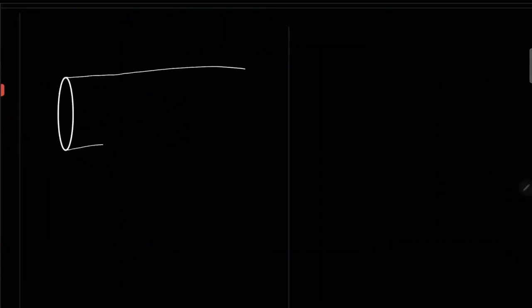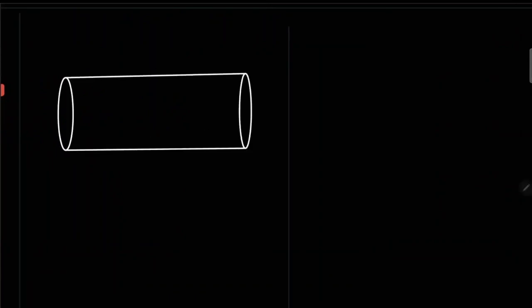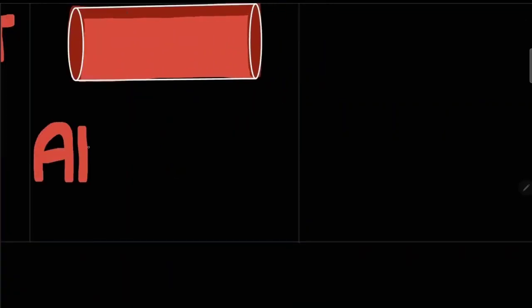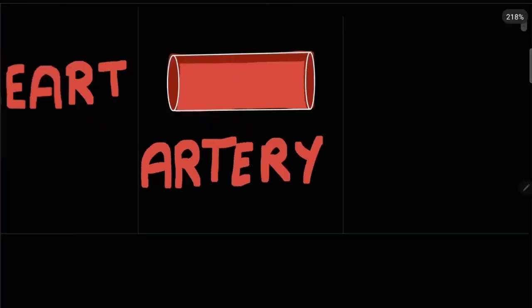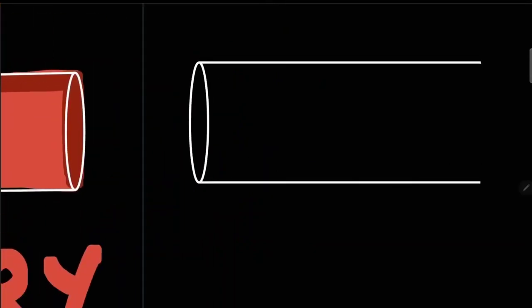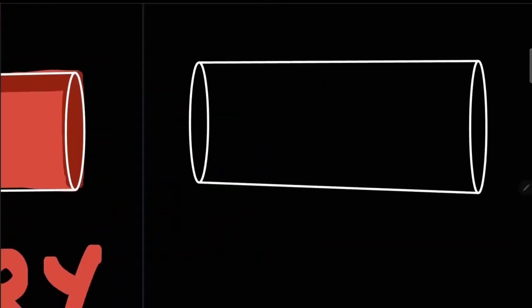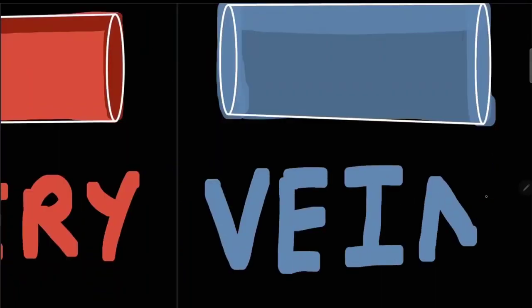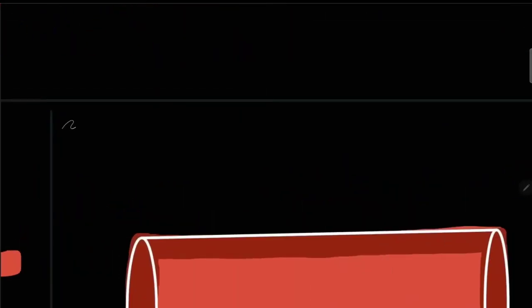The circulatory system includes your heart, blood vessels, arteries, and veins.